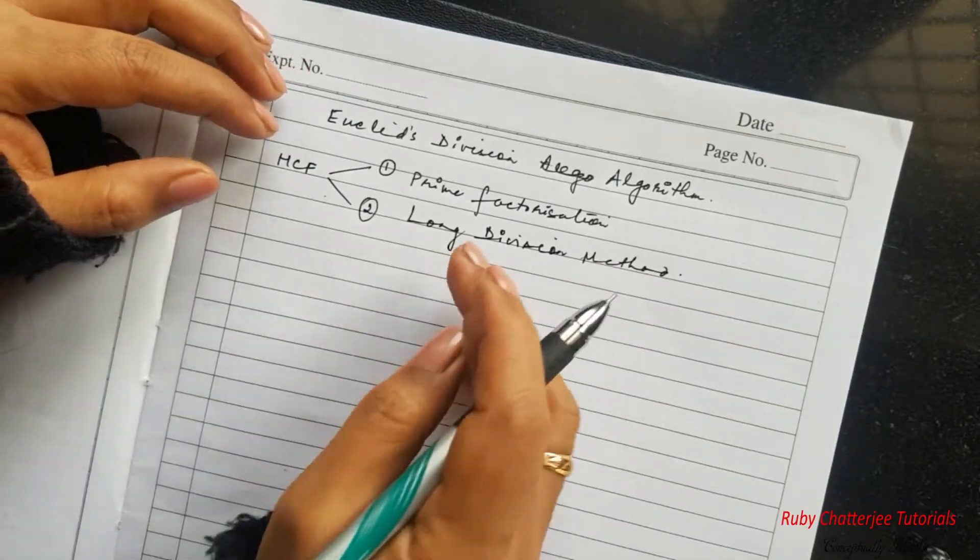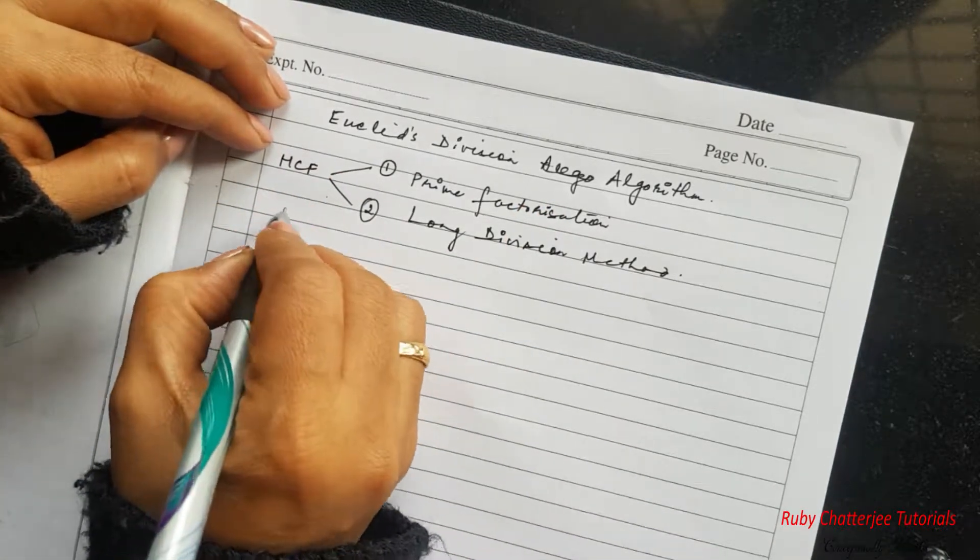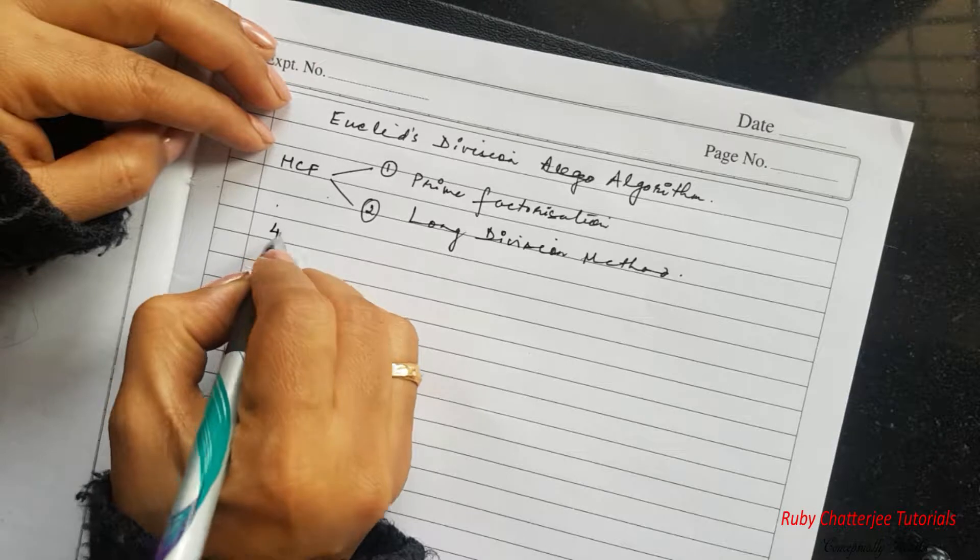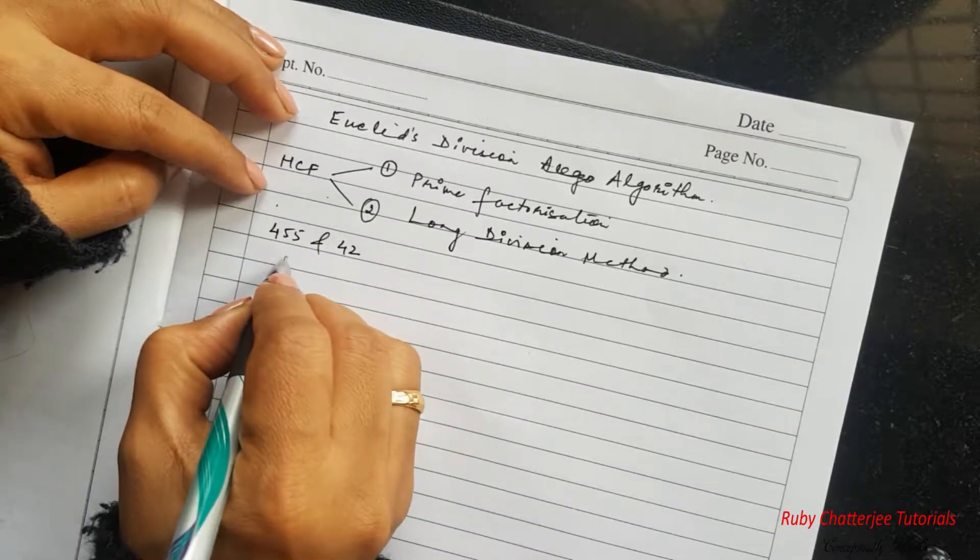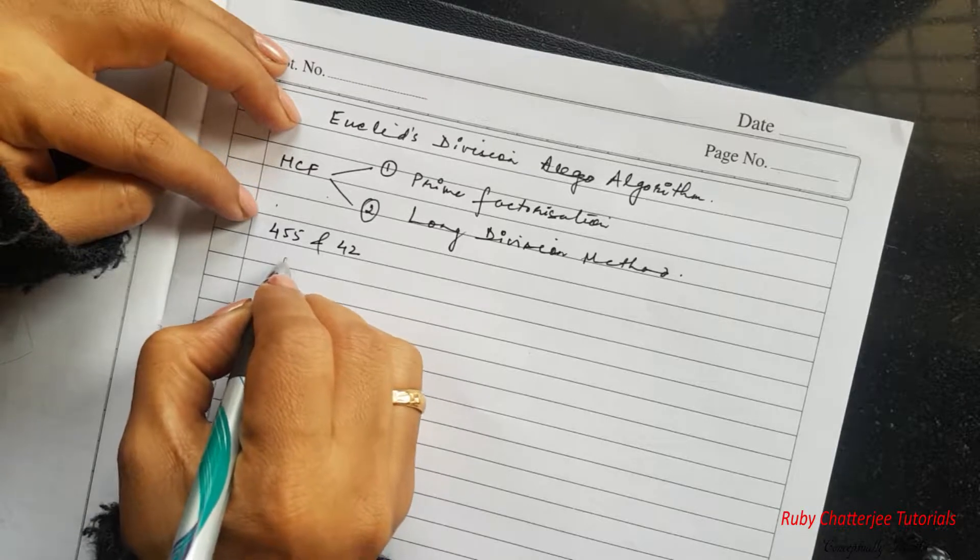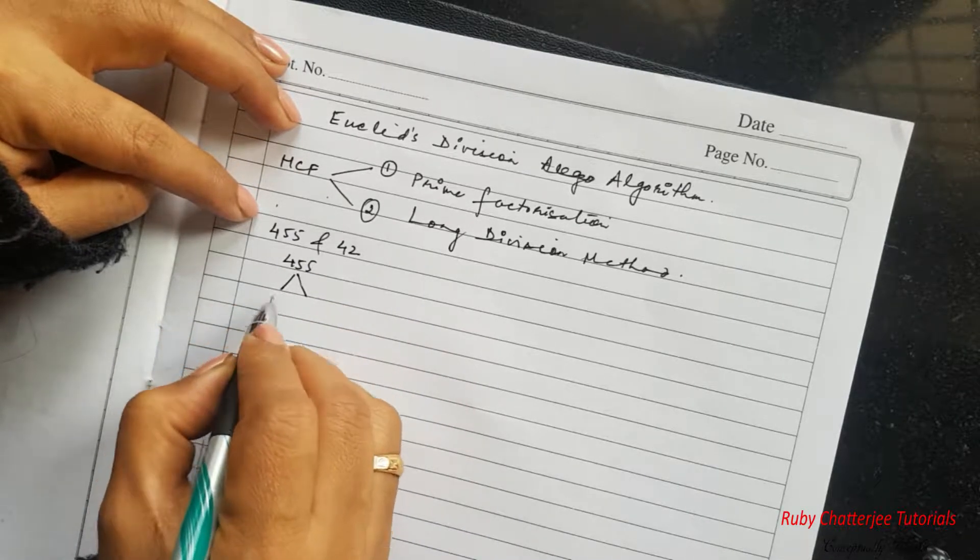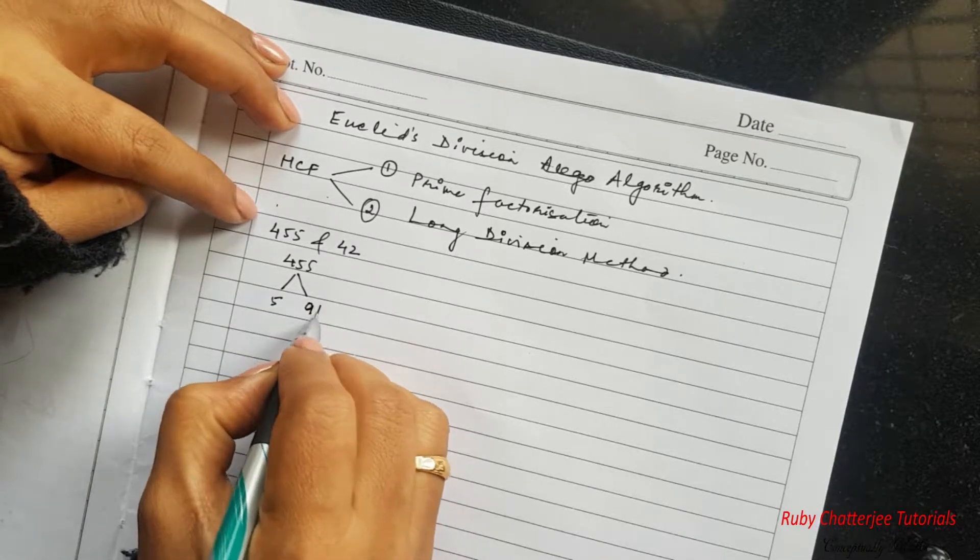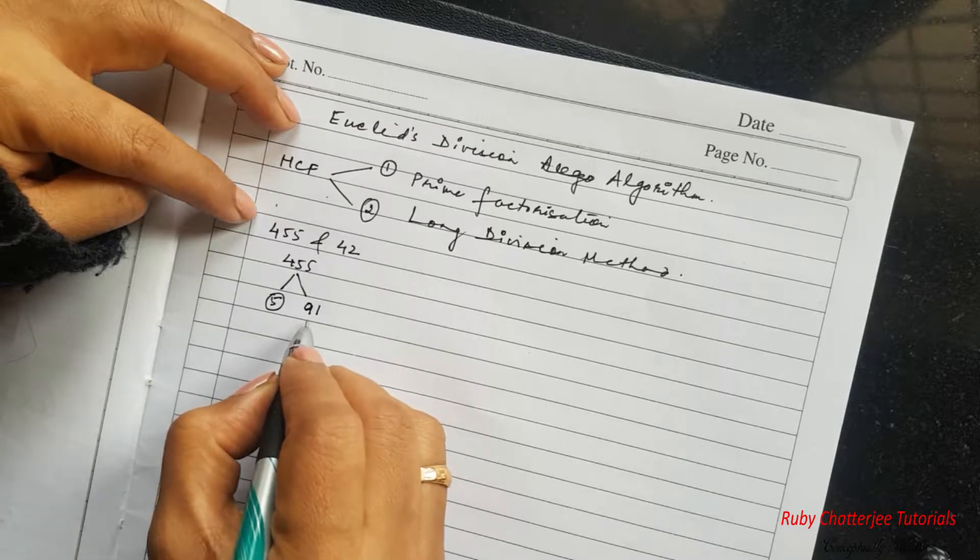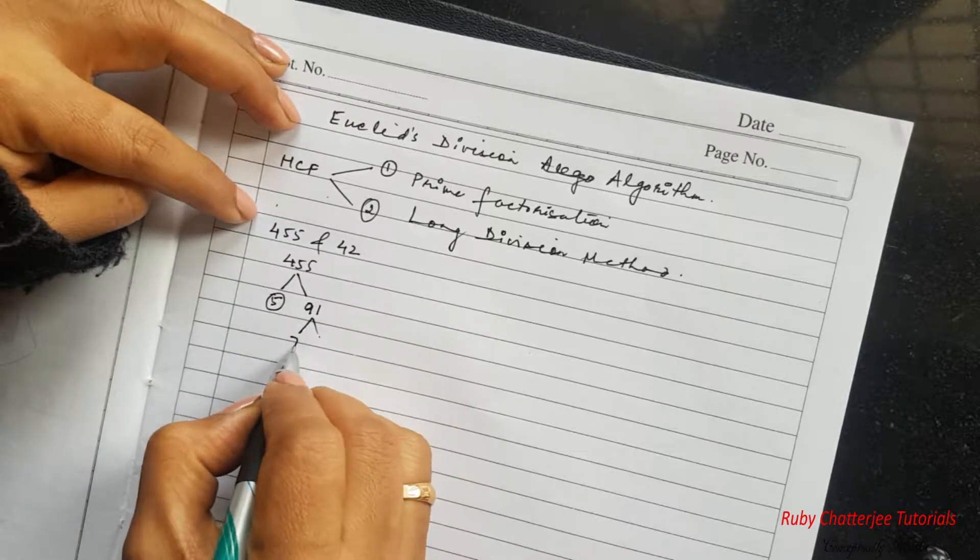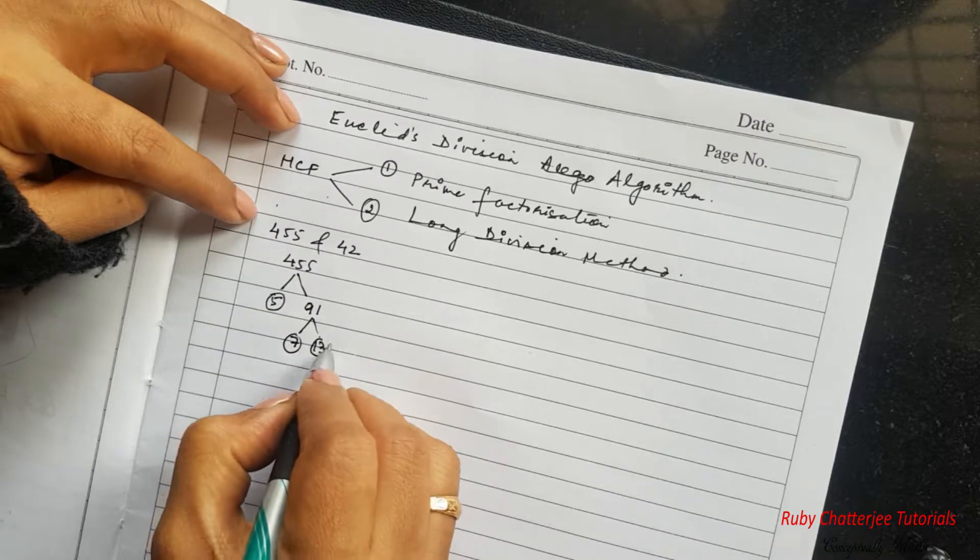Now let us try to recall what was the prime factorization method to find the HCF. So for that let us take the two numbers 455 and 42. First we will prime factorize 455. So it is 5 into 91, so we round off the prime factor 5 and this is nothing but 7 into 13.